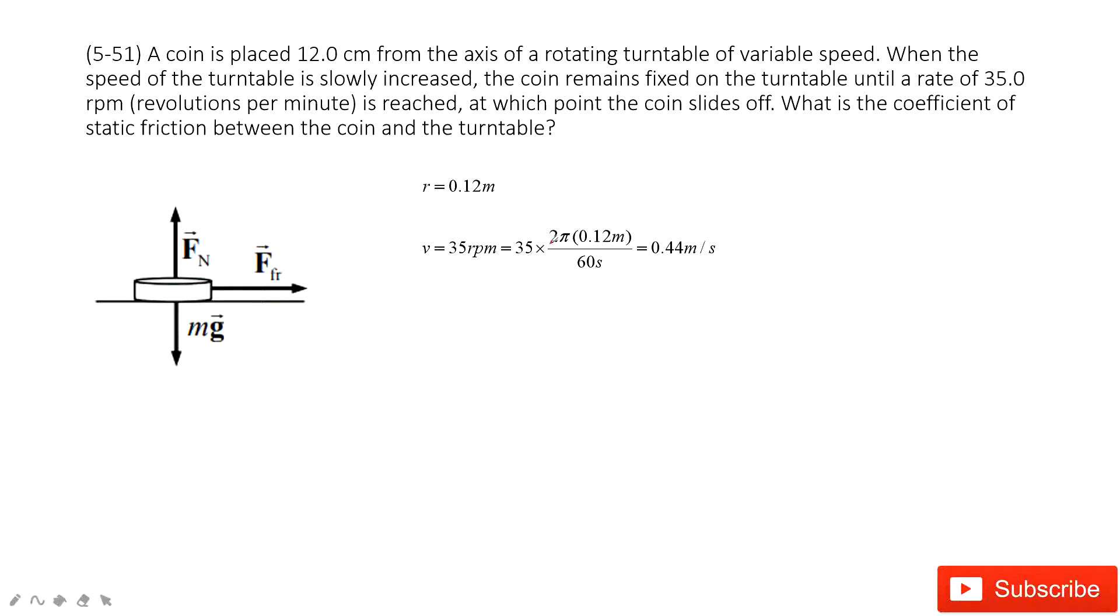So 35 revolutions, this is the total distance it traveled. And then the time taken, because they say per minute, so it is 60 seconds. In this one, we use the total distance divided by time taken. We get the velocity in unit meters per second. So this one we must take care.